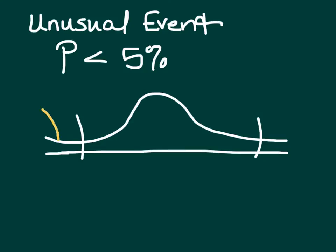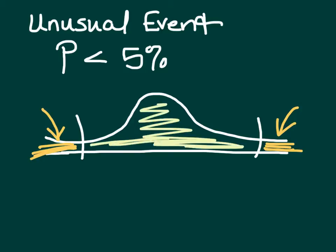In other words, it would fall out here in the tail and have a probability in the extremes. Those probabilities would also be in the less than 5% range. So if we draw our tail and observe that it falls out here in the tail, we could see that it was an unusual event. All of our events that fall in the larger portion of the curve are considered usual events.